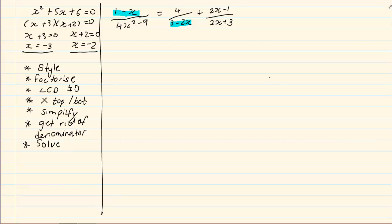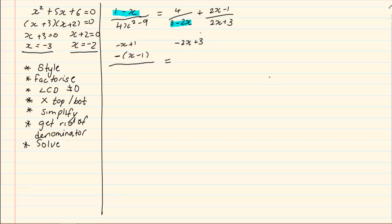Style says that unknowns must be before knowns, and negatives must come after positives. Now if we swap 1 minus x we get negative x plus 1, but then I have a negative — we don't want that. We want a positive x. So we take out a common negative, giving us x minus 1. Similarly, 3 minus 2x becomes minus 2x plus 3; we take out a negative and we are left with 2x minus 3.